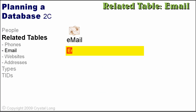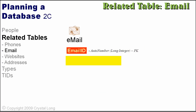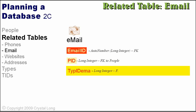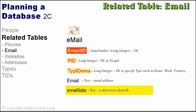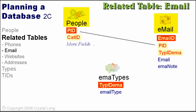The Email table has an auto-number primary key named EmailID. The PID field is a foreign key to people so we know who the email address belongs to. We can use TypeID_EMAI to specify a type, such as Home, Work, Primary, or Alternate. The Email field is for the email address. EMAI_Note is for a short note. People can have more than one email address, so there is a one-to-many relationship between people and email.